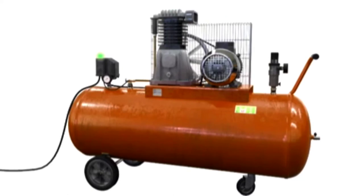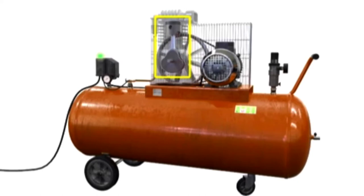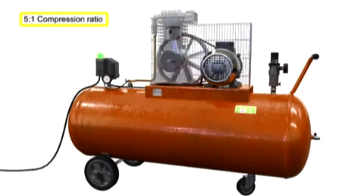This is a single-stage compressor. It has only one piston and cylinder and compresses the air in only one stage. A single-stage compressor typically has a compression ratio of 5 to 1 with an output pressure of about 50 to 75 PSI.